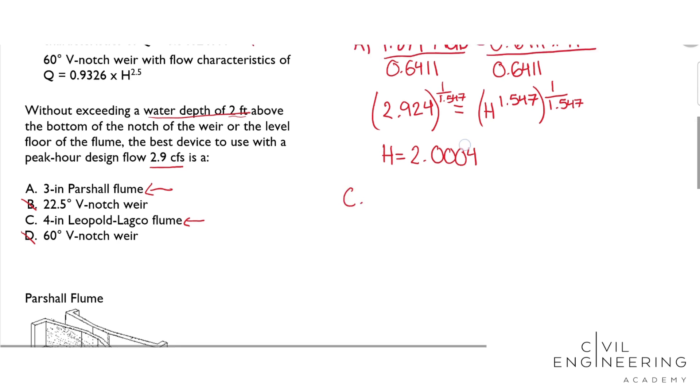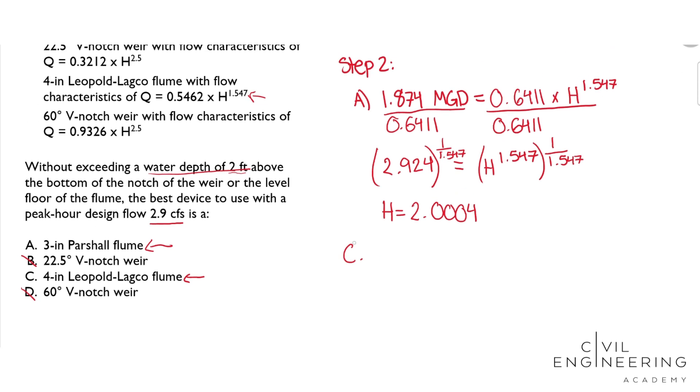We will get 1.874 MGD equal to 0.5462 times H to the 1.547. Divide both sides by 0.5462.